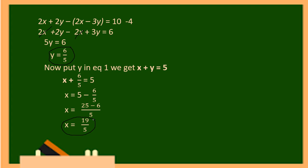So this is the elimination method. It is a very simple method — we just delete one variable by making the coefficients of that variable the same, then observe the signs: if signs are different we add, if signs are same we subtract. The value of x is 19 by 5 and y is 6 upon 5. I hope you understand how to perform the elimination method to find the values of variables in a pair of linear equations in two variables.